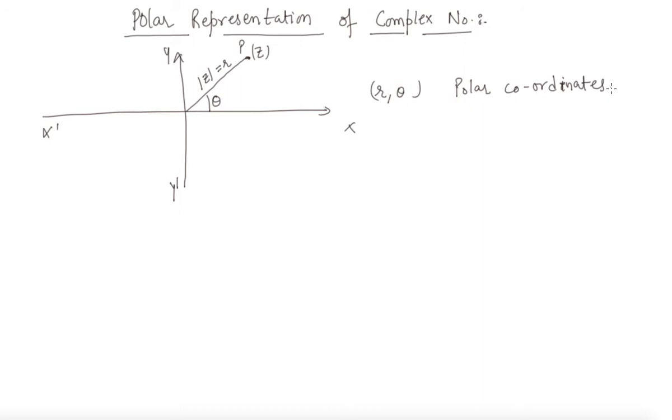How we will find out or how we will convert a complex number on Argand plane to a polar representation? The polar representation is like this: r cos theta plus iota times r sin theta.